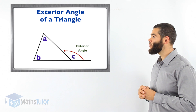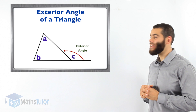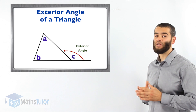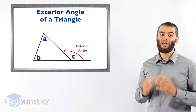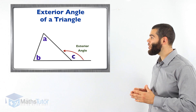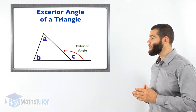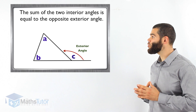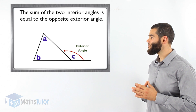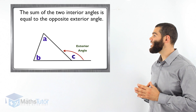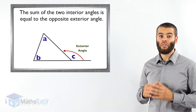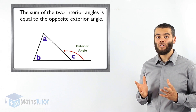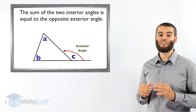Looking at this diagram, we notice there's a triangle and outside it we have an angle marked with a C. This angle is outside — it is the exterior angle of this triangle. The concept says that the sum of the two interior angles is equal to the opposite exterior angle.